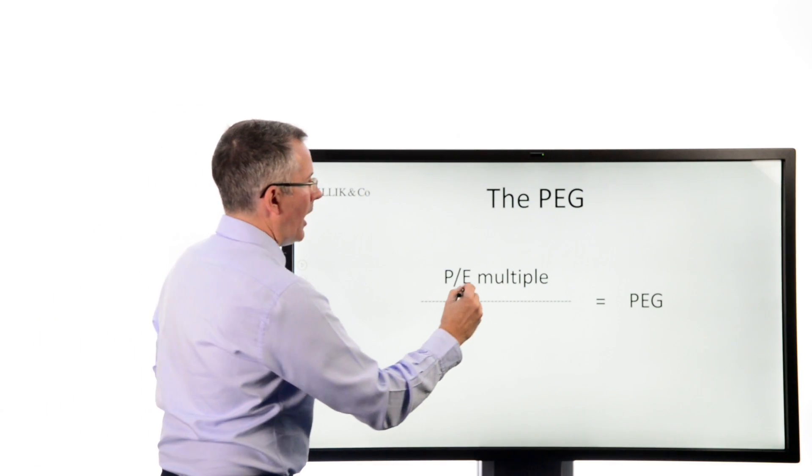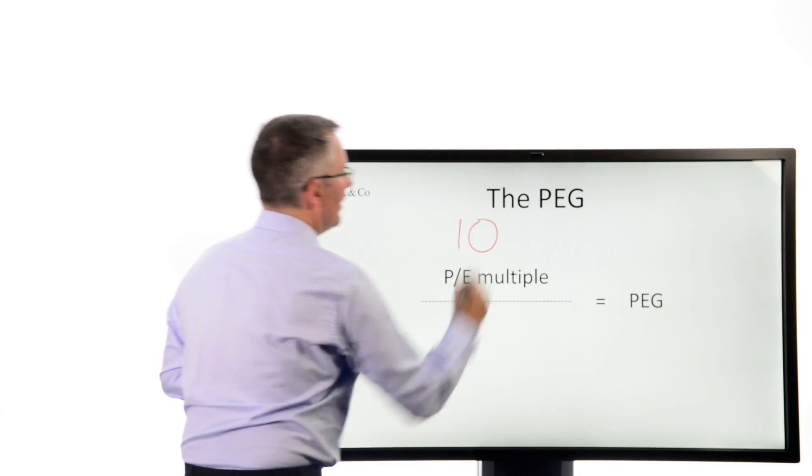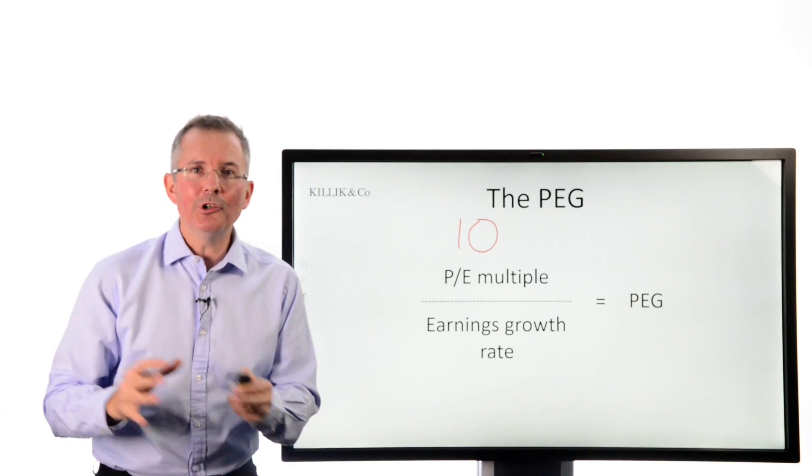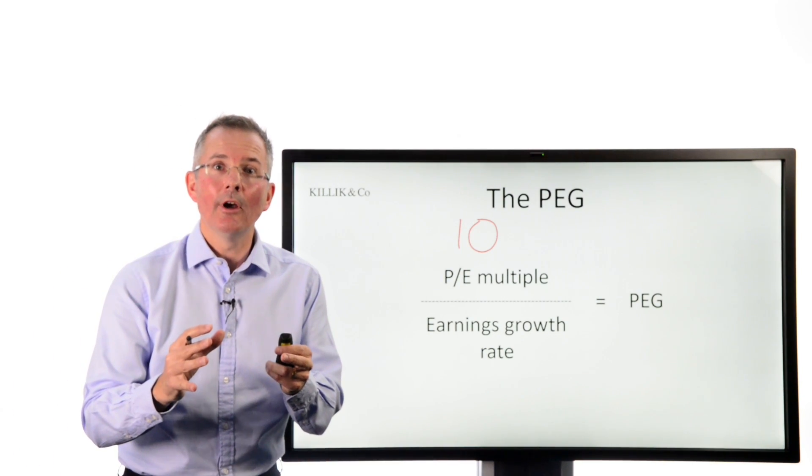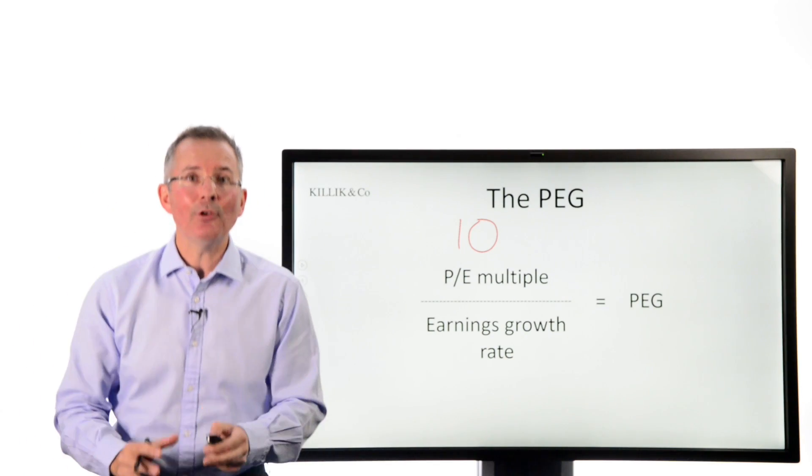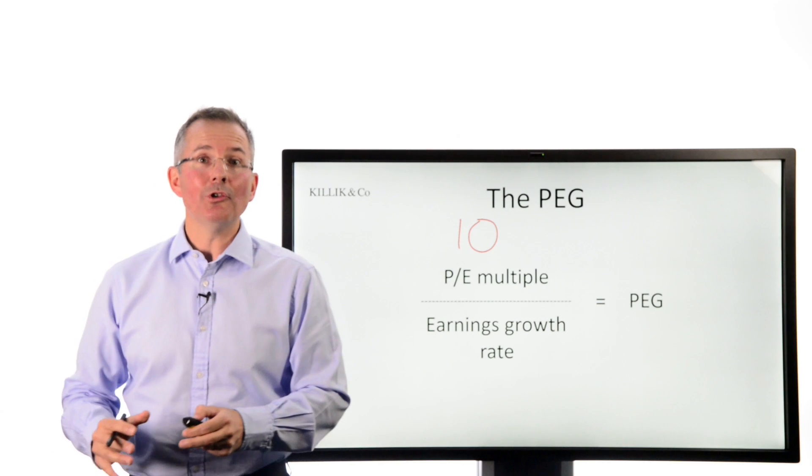If we were to put, say, a PE multiple of 10, we already know that, and compare it to the firm's projected earnings growth rate, could we come up with a number that tells us whether essentially the PE undervalues future growth or overvalues future growth?